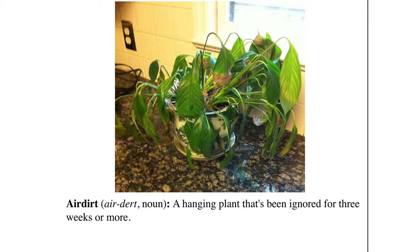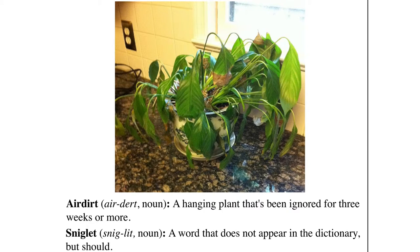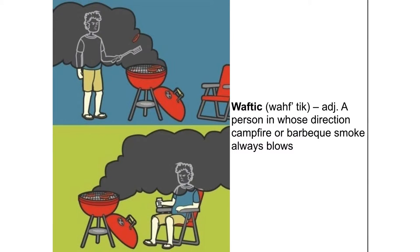There's a term for this — it's called 'air dirt.' If this were a hanging plant that's been ignored for three weeks or more and becomes dead — air dirt. That comes from the world of Sniglets, a word that doesn't appear in a dictionary but should. Another of my favorites is 'Waftik' — a person who always seems to be in the path of smoke whether it's grilling. Maybe an activity outside of class, as you go through the course, is to think about Sniglets that might apply in soil biology.